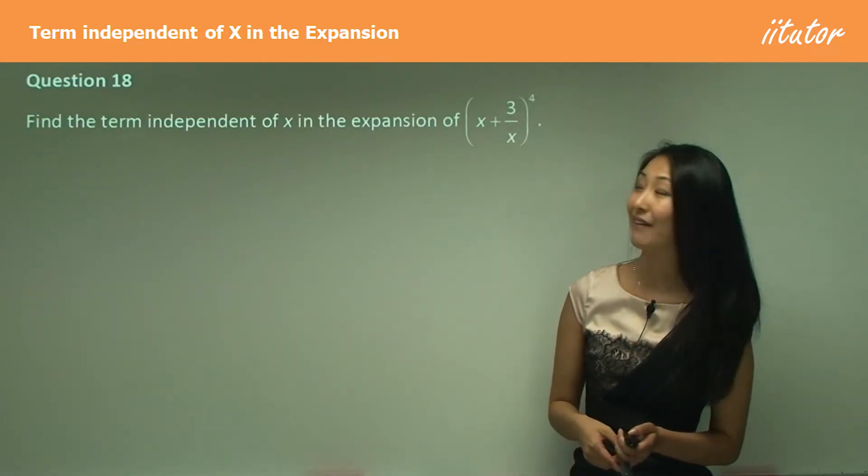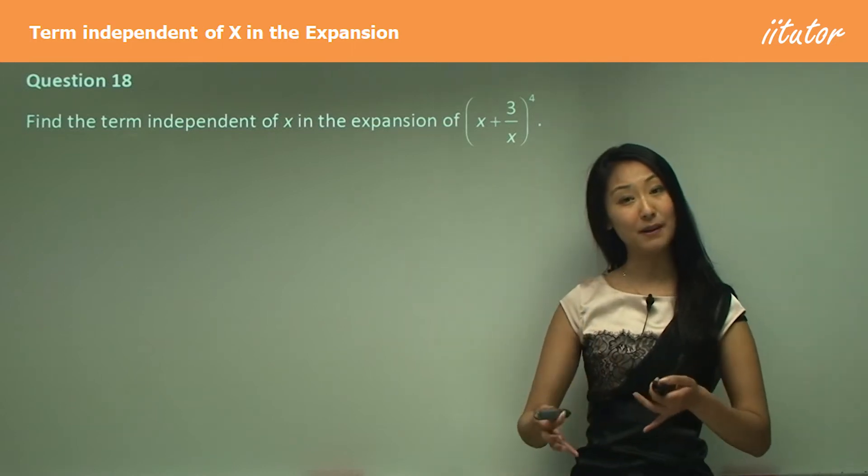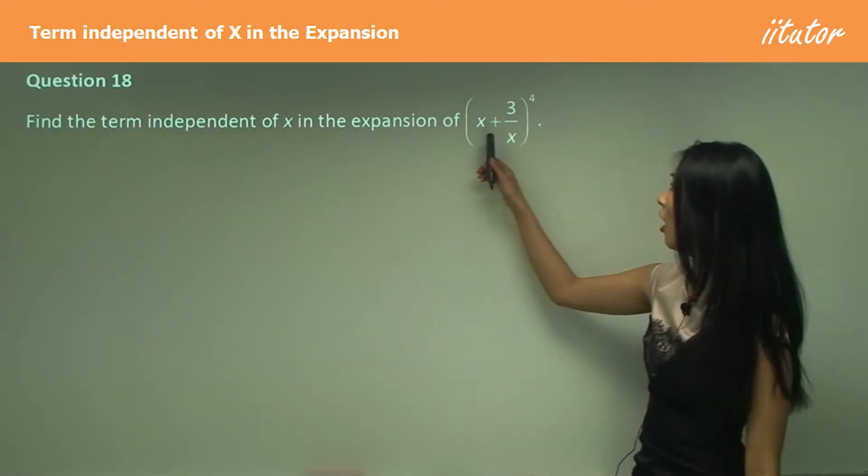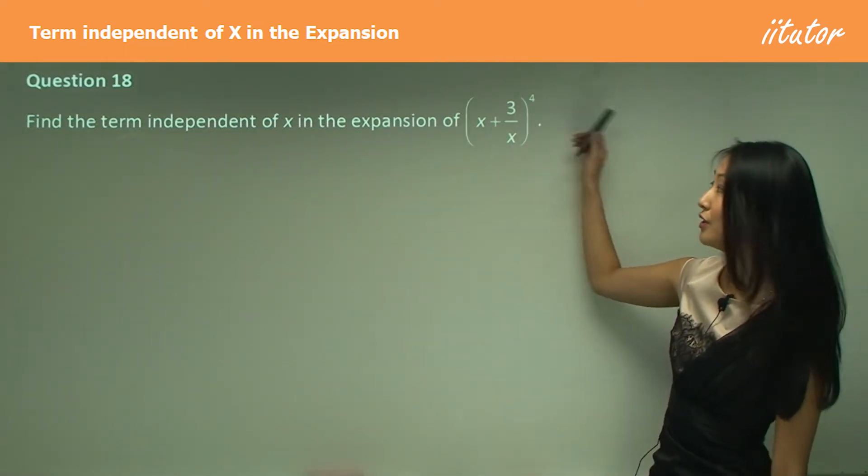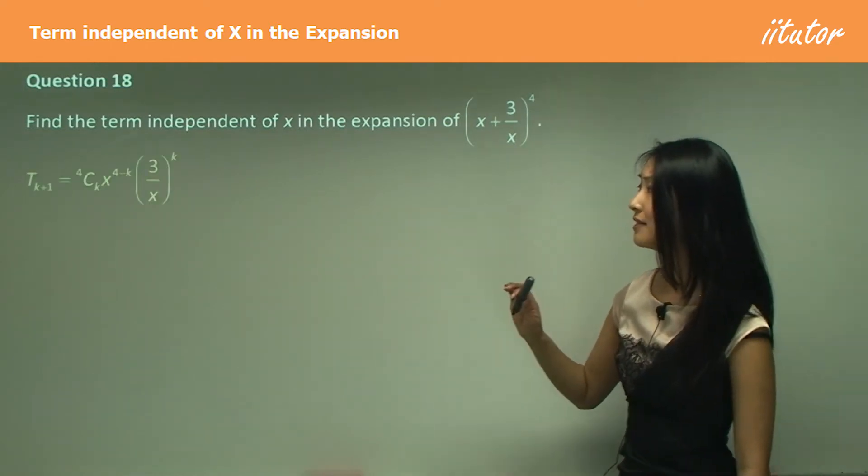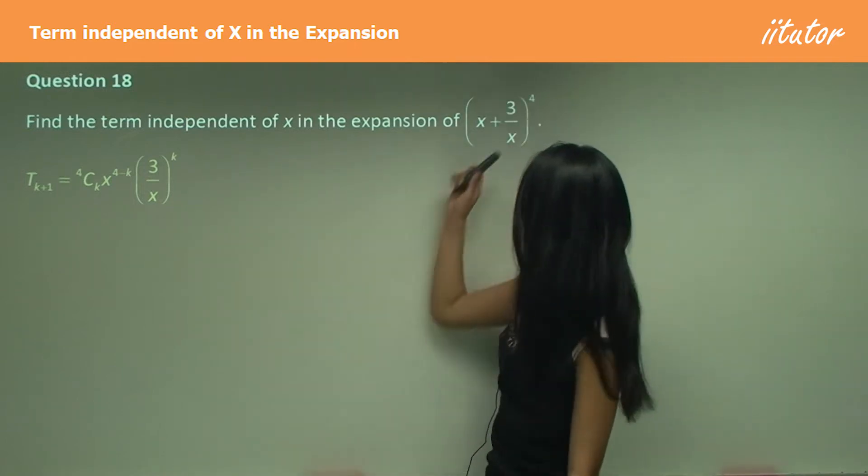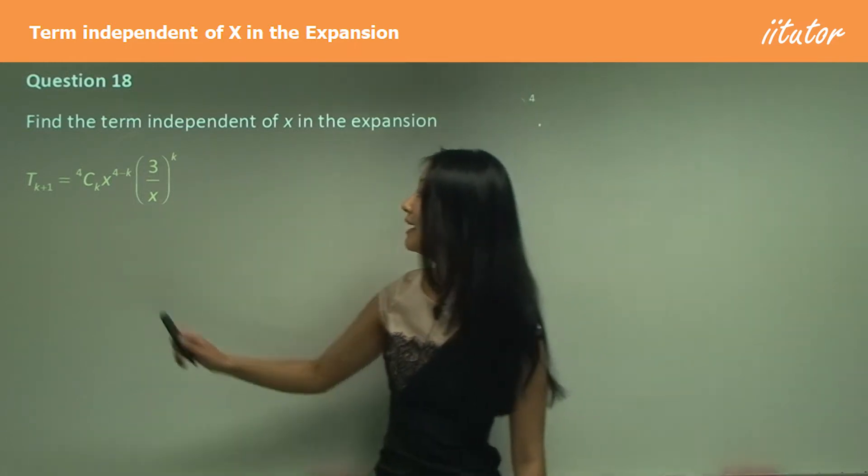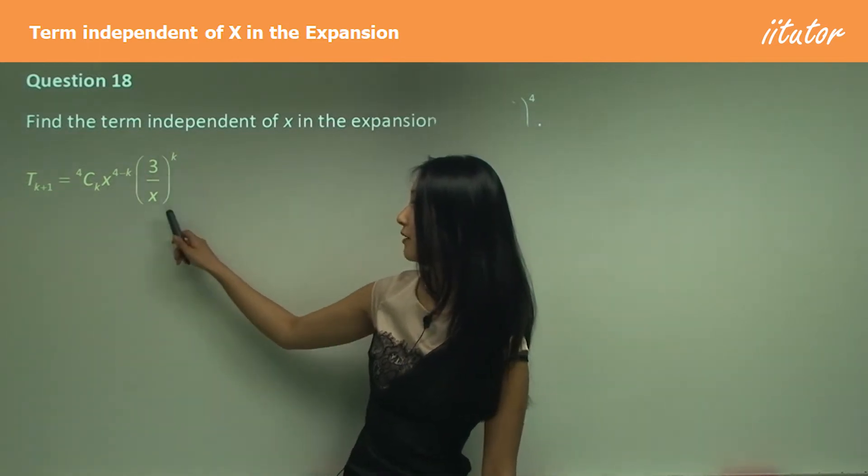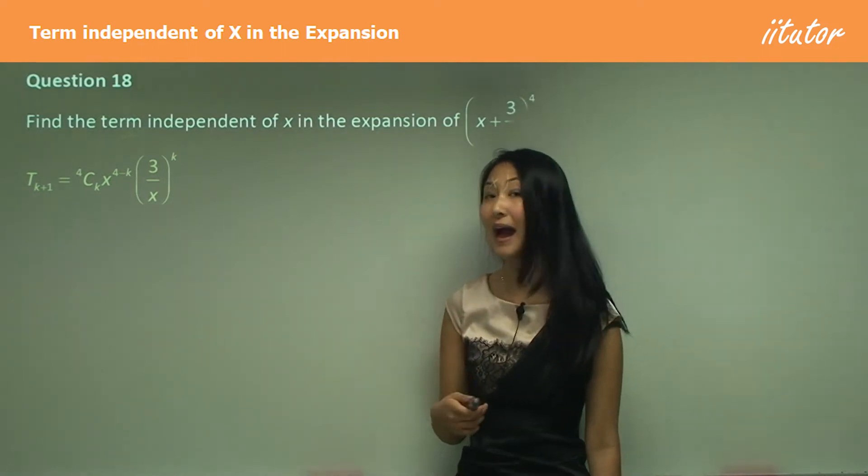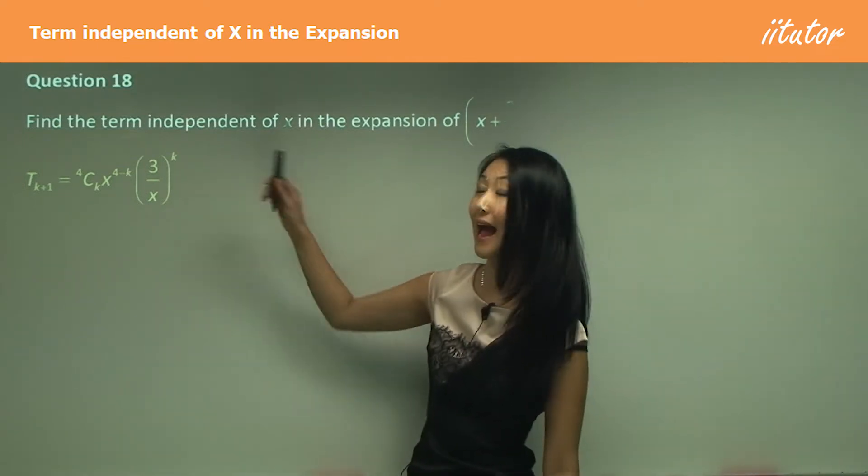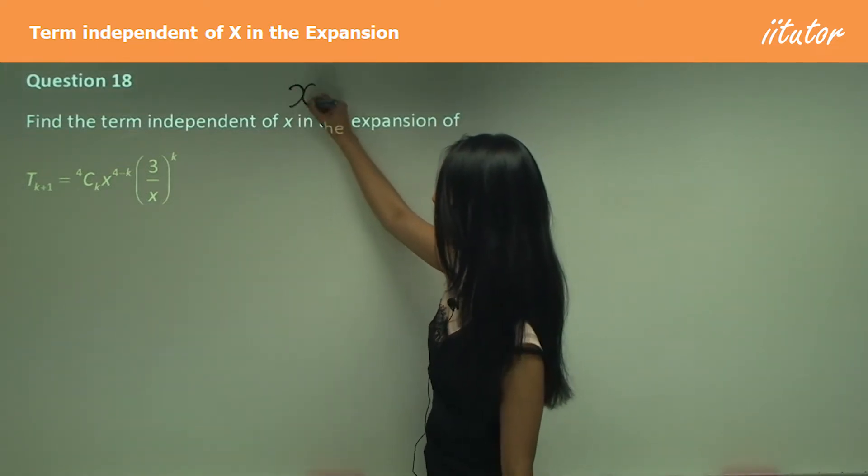Let's start by finding the term independent of x, or the constant term, in the expansion of (x + 3/x) to the power of 4. Like we did with coefficients, first find the general term. The general term is 4Ck x^(4-k) times (3/x)^k, and we need to work out what k equals for x to the power of 0.